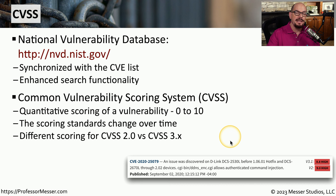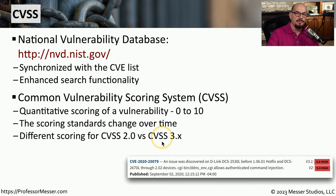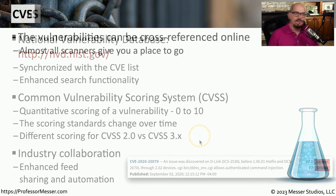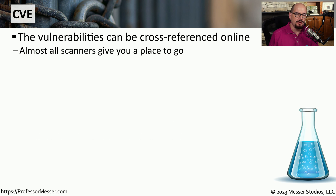For example, you might see a vulnerability that has different scores associated with it — one might be the CVSS 2.0 score and the other might be a CVSS 3.x score. The industry wants to make these vulnerability lists valuable, and having a separate score allows you to prioritize them based on your specific needs. You'll often be referencing these vulnerability lists, especially when you see something unknown pop up in your vulnerability scanner. Fortunately, all of these lists are available online, and most vulnerability scanners will specify what CVE is associated with that vulnerability.